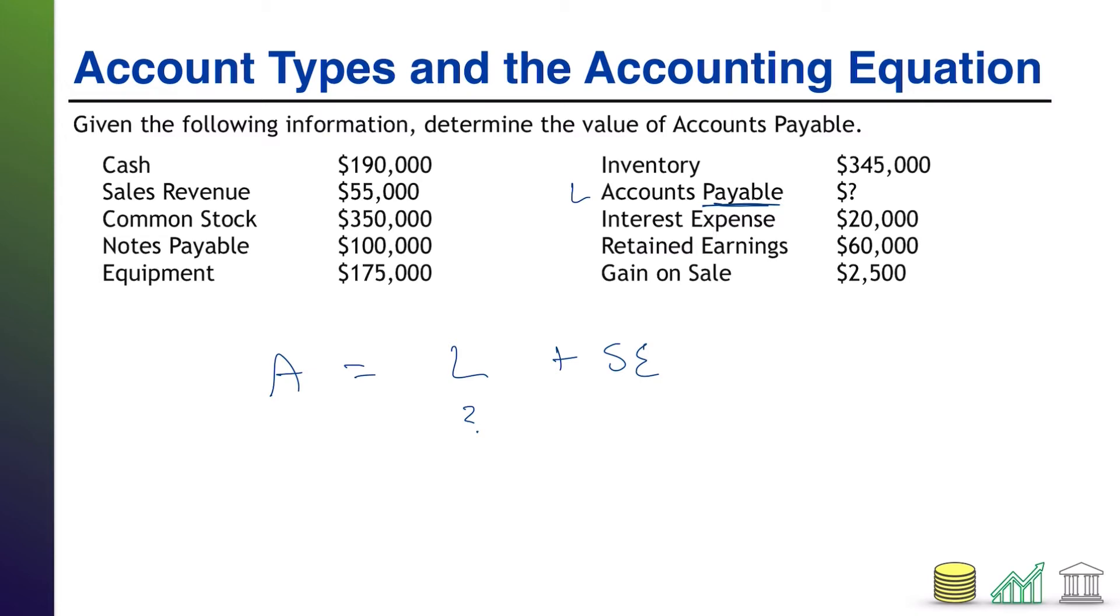Now, of course, to classify everything in here as A, L or SE, we have to go through the accounts and decide where does each one fit. So let's start with cash. Cash is something you own, a value that's an asset. Sales revenue is not an asset, liability or equity. Sales revenue is a revenue that goes on the income statement. Common stock is part of your shareholder's equity. All stocks fall under shareholder's equity.